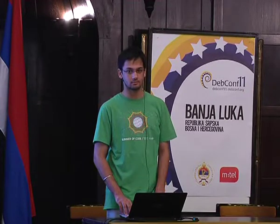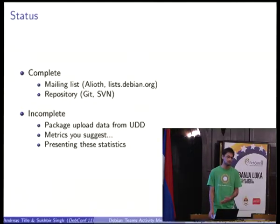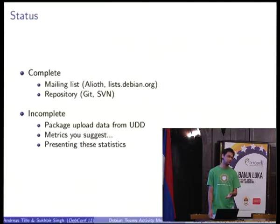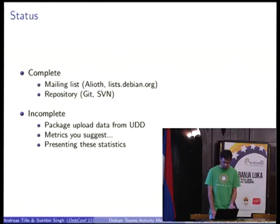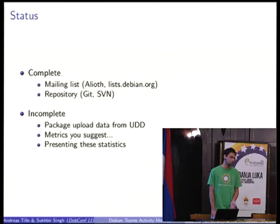So, this is what we have done till now — it's been about two months. We have mailing lists for Alioth, which works very well because PiperMail has all the archives already. For lists.debian we had lots of discussions and then finally we fetch them over NNTP, create inboxes, and throw them over to the Alioth parser. Git and SVN repositories are complete. What is incomplete is fetching package upload data from the Ultimate Debian Database. Finally we'll have something like Popcorn — so you can easily check who was the most active contributor in a given month.